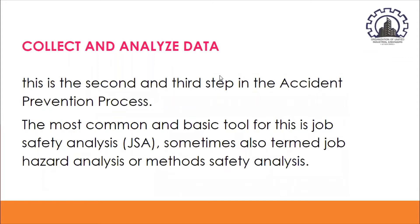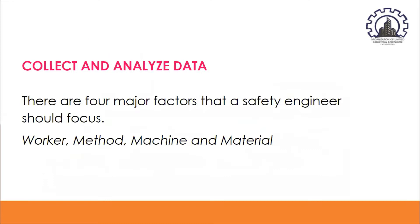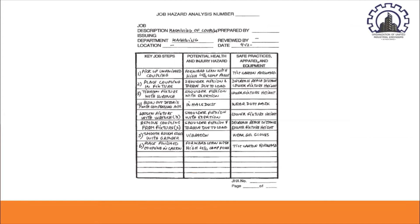The second and third steps are collecting and analyzing the data. The most common basic tool is the Job Safety Analysis (JSA), sometimes also termed job hazard analysis or method safety analysis. The major factors the safety engineer should focus on are the worker, method, machine, and material. A job hazard analysis table shows key job steps, potential health and injury hazards, safe practices, and apparel and equipment being used.